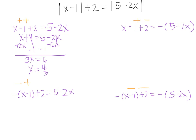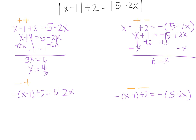For the next equation, I can combine terms. So I will have x plus 1, and when I distribute I get negative 5 plus 2x. I can add 5 to both sides and subtract x from both sides, giving me 6 equals x.